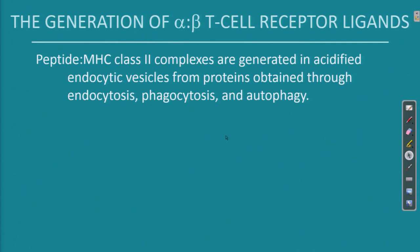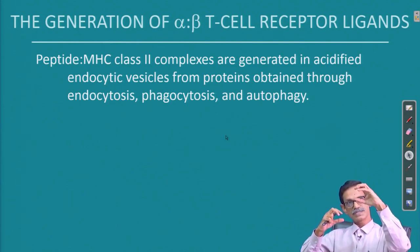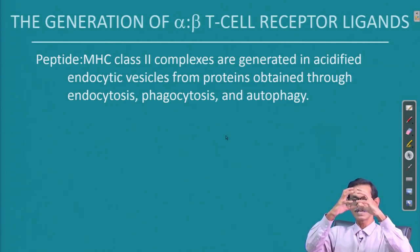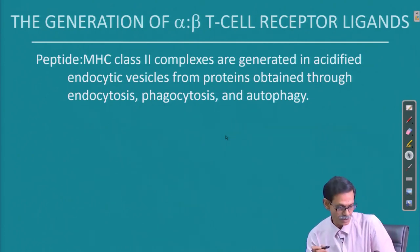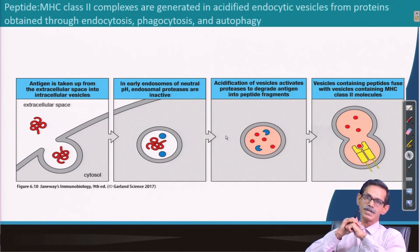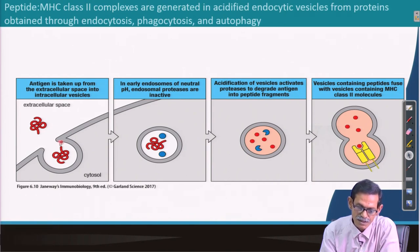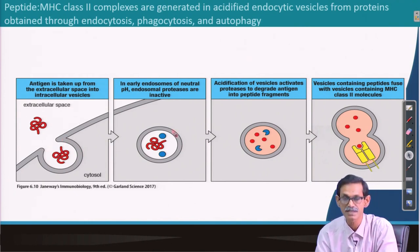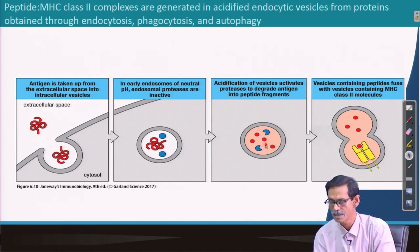MHC class II complexes are generated in acidified endocytic vesicles. Proteins obtained through endocytosis, phagocytosis, or autophagy — the vesicle is having the protein and the lysosome is fusing. The phagosome, endosome, or autophagosome fuses with the lysosome, becoming a single vesicle that will degrade all the protein. This is a very straightforward representation of what is happening. There is a vacuole in the cytosol; the endosome or phagosome brings protein in, fuses with the lysosome, and it will be degraded.